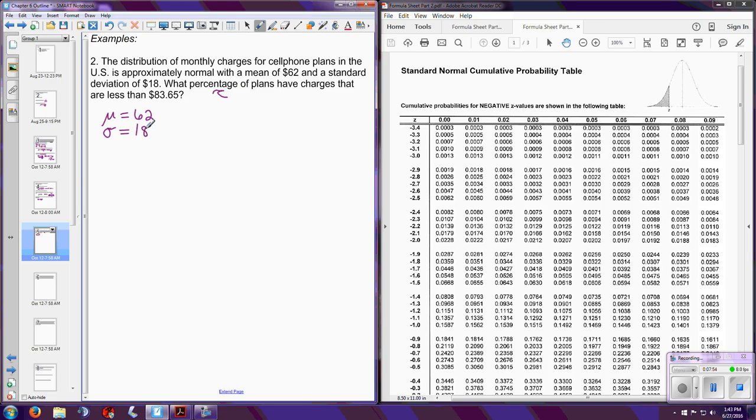Let's look at an example. The distribution of monthly charges for cell phone plans in the U.S. are approximately normal with a mean of $62 and a standard deviation of 18. What percentage? Notice here they say percentage, but if you were asked for the probability, that's just telling you how to write your final answer. What percentage of plans have charges that are less than $83.65? Well, before you go and do anything crazy, copy down what we know. We know that the mean is $62 with a standard deviation of $18.